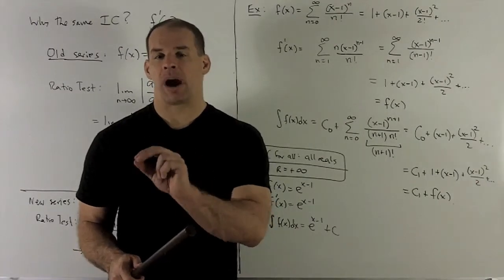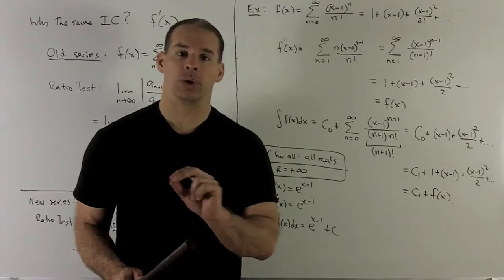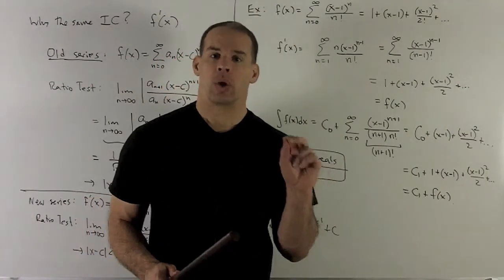So (n+1) times n!, again, n! is the product of 1 through n. If I multiply by n+1, it turns into the product of 1 through n+1, or (n+1)!.